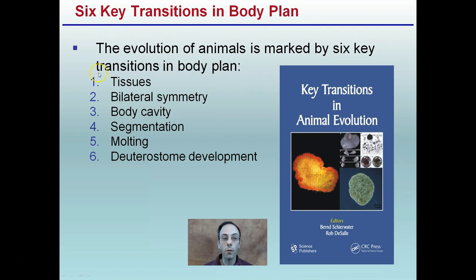We have presence or absence of tissues, bilateral symmetry, presence of a body cavity, segmentation, whether the organism molts, and deuterostome development.